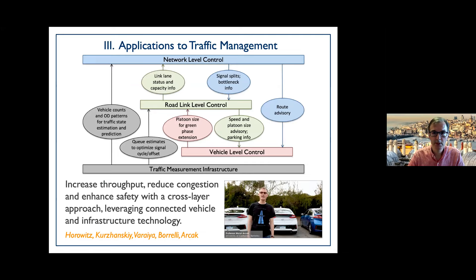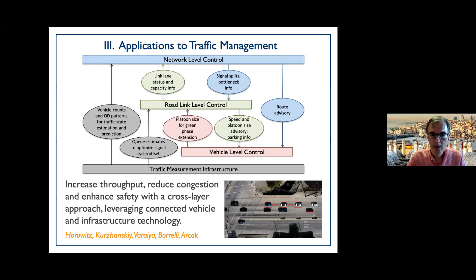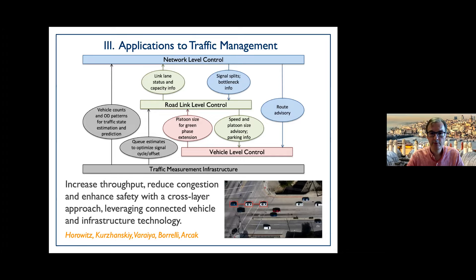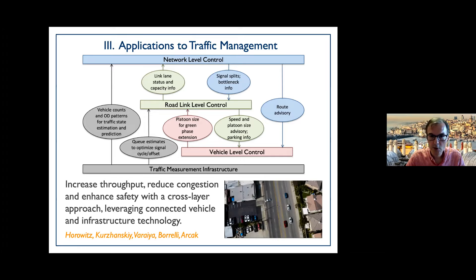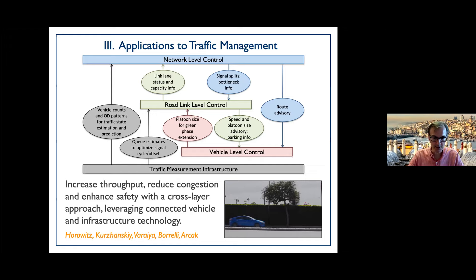In the final part I'll discuss applications to traffic management, where layers arise very naturally. At the lower layers we have vehicle control and platoon formation; at the road link level we look at signal timing plans and on-ramp metering; and at the high level we have routing problems. The overall objective of this NSF CPS project is to increase throughput while reducing congestion and enhancing safety by connecting the layers and leveraging connected vehicle and infrastructure technology.